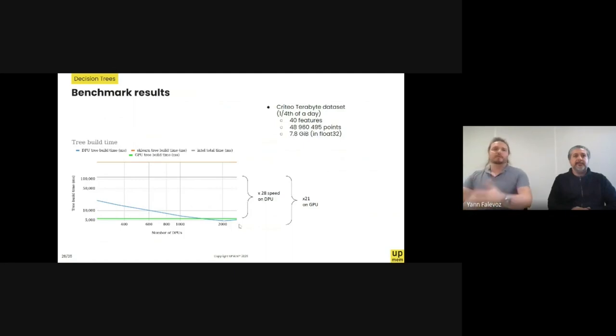So, what if we look at something a bit bigger, again, the Criteo dataset with one-fourth of a day. In that case, okay, now we are passing, we are exceeding the performance of the GPU, not by a lot. But we get there eventually. We're still getting into saturation and still not in the linear regime. So, we could consider, okay, maybe it's just the dataset is too small.